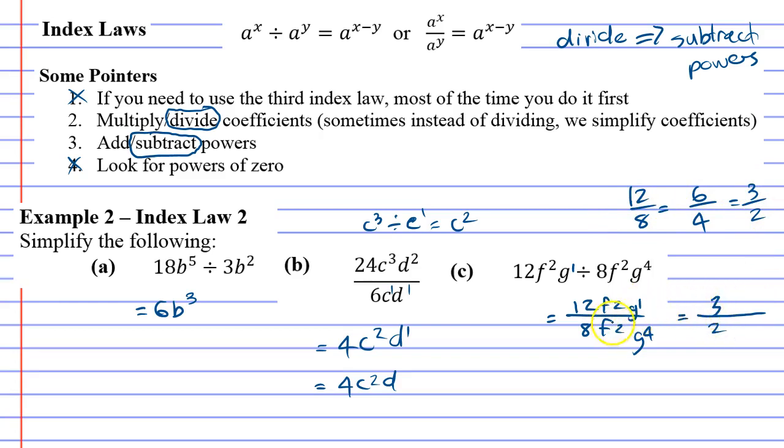Now we're going to look at our pronumerals. If we do f to the power of 2 divide f to the power of 2, that's quite an interesting one. When I do 2 minus 2, I get a power of 0. Remembering that f to the power of 0 equals 1. I'm just going to give you a really good shortcut: whenever you get the same pronumeral with the same power, you can just cancel it completely.